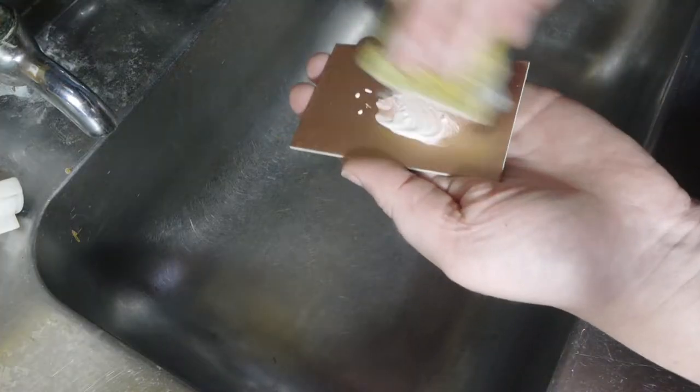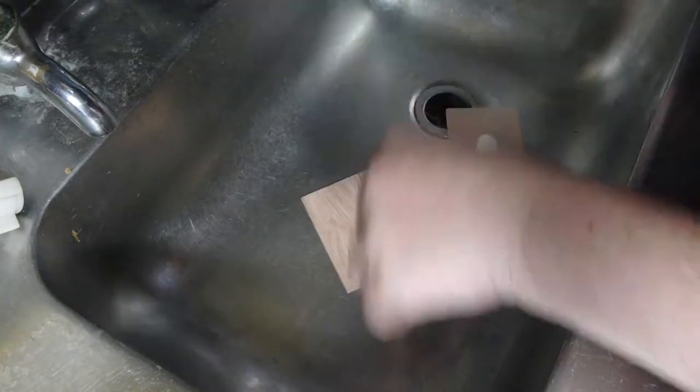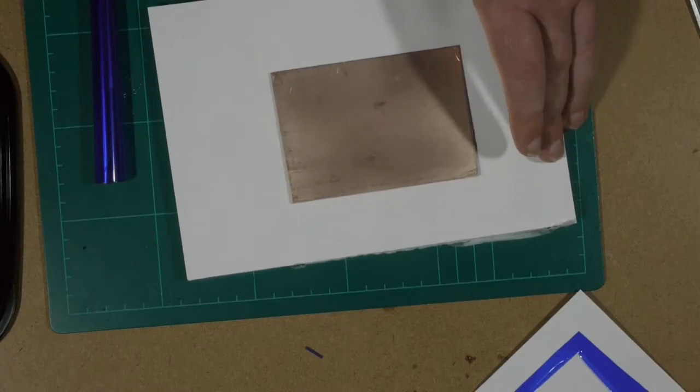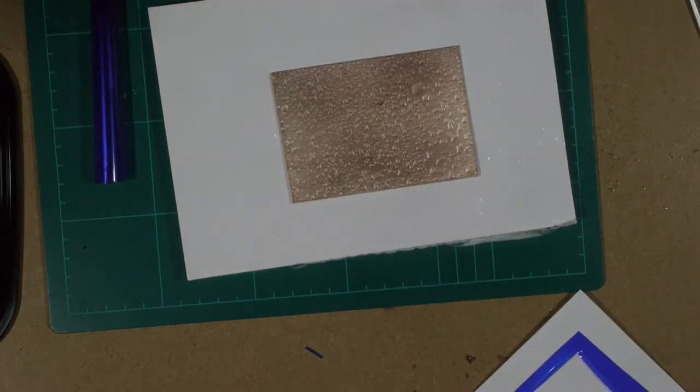I use scouring liquid and a scouring pad to clean up the PCB, then hot water, and just keep cleaning it until the water stops beading.